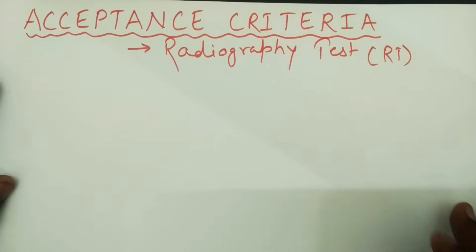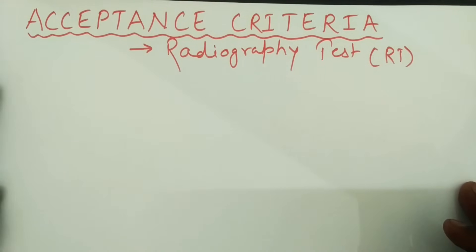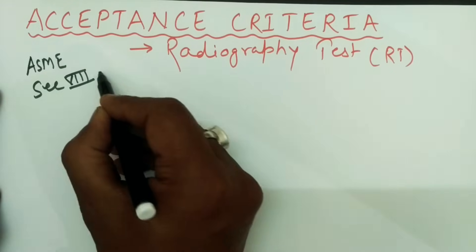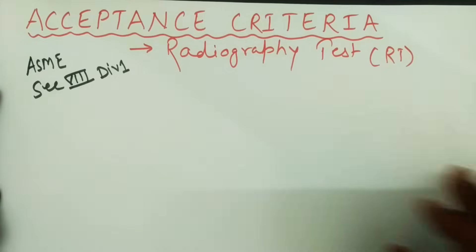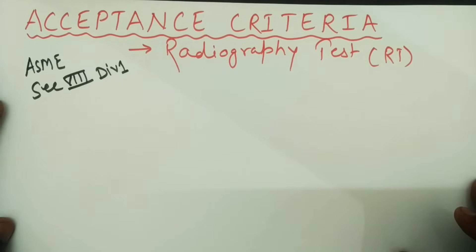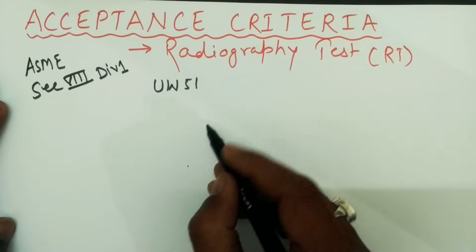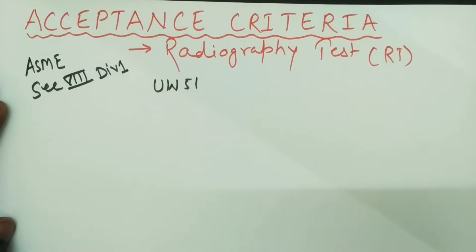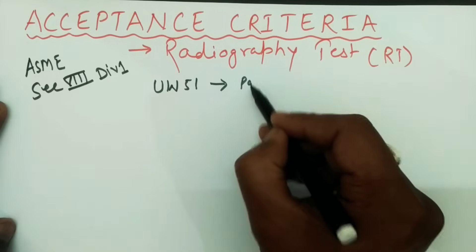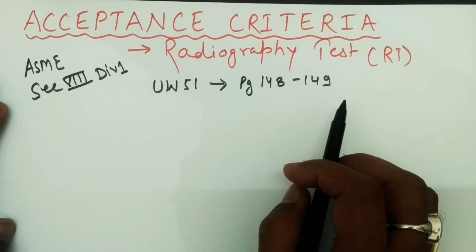Today's video is about the acceptance criteria for radiographic testing as per ASME Section 8 Division 1. The acceptance criteria for radiographic test is given in UW-51 of ASME Section 8, specifically in UW-51 sub-paragraph B, found on page numbers 148 and 149.